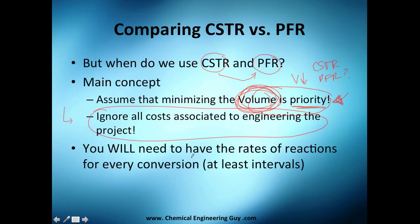To make this decision, you will need the rates of reaction for every conversion value. You're going to have a list, and you'll need various rate of reaction values with X. Having only one value will not help.